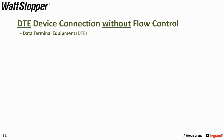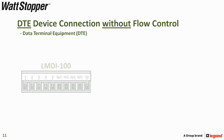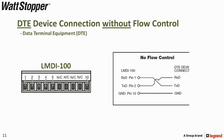The second device type is a DTE connection without flow control. Use the connections as follows, using pins 1, 2, and 10 of the LMDI100.